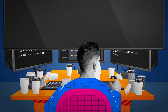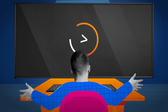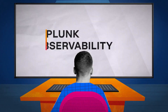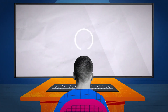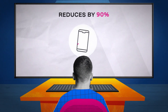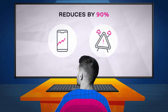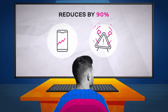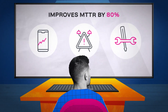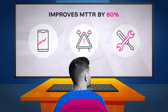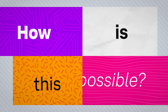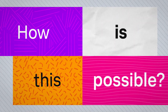It's time for a new approach to observability. Splunk Observability reduces unplanned downtime and alert noise by 90% while improving mean time to resolve by over 80%. How is this possible, you ask?